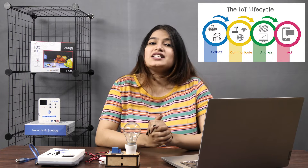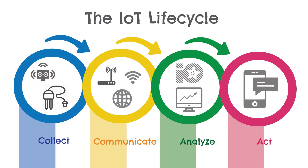Now that we know a little about IoT, let's understand how the IoT ecosystem works in the real world using what is known as an IoT life cycle. The IoT life cycle comprises systems for collection, communication, analyzing, and acting. Let's start with the first phase — that is, collection.